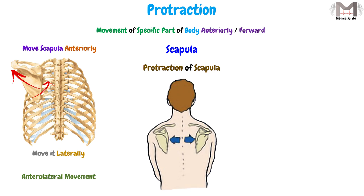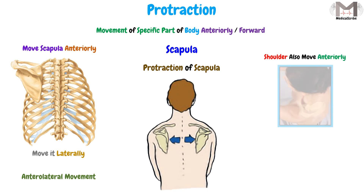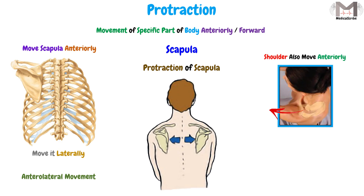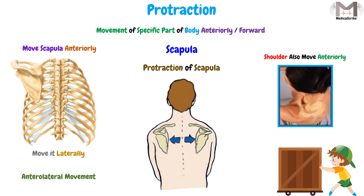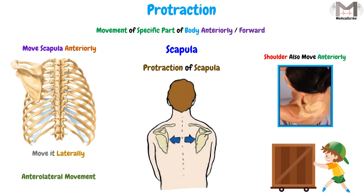Because we move the scapula anteriorly and at the same time we move it laterally. As a result of this movement, the shoulder will also move anteriorly. An example of this movement is when we push against something — so we will make a protraction of the scapula.